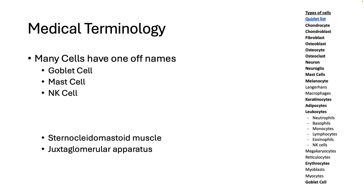Likewise, the juxtaglomerular apparatus: 'juxta' means next to, 'glomerulus' is a structure in the nephron, and 'apparatus' just means structure. So juxtaglomerular apparatus — we know it's right next to the glomerulus. That helps you remember where these things are. Remember: structure, function, location.